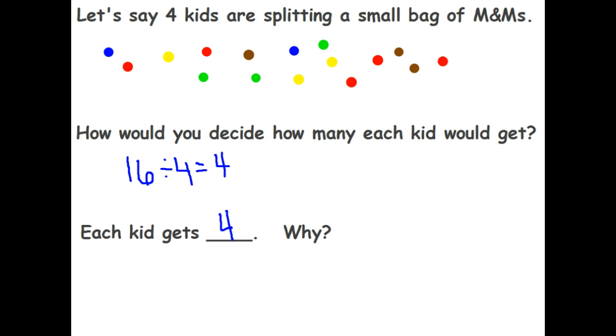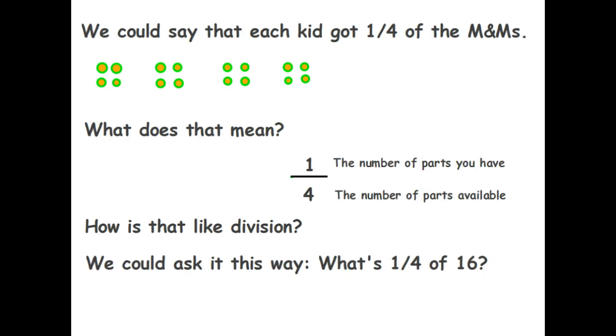Why is that? Well, we could look at it a different way and say that each kid got one-fourth of the M&Ms. If you take a look at the 16, we divided it into four equal shares of four each. So each kid got one-fourth. What does that mean? Well, each kid gets one part that he or she gets out of the four available. How is that like division? Well, I could ask the same question this way. What's one-fourth of 16?